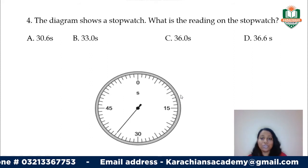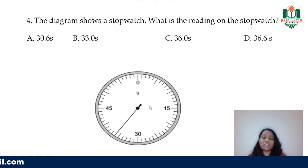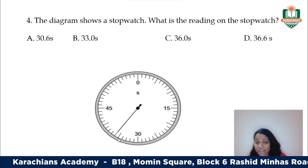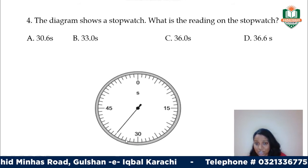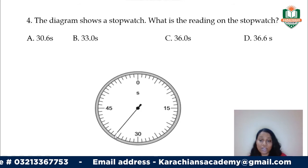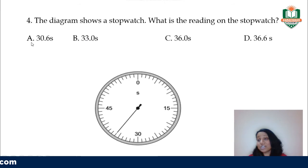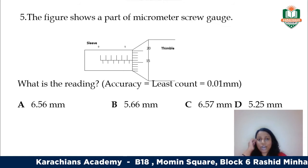Next, a diagram shows a stopwatch — what is the reading? It's showing only one dial with one hand, so there are no minutes, only seconds. Zero is here, 15, 30 marks are shown. Between 30 and 45: after five units it's 35, then 40, then 45. Counting: 30, 31, 32, 33, 34, 35, 36 — each division is one unit. Your answer is 36, which is option C.